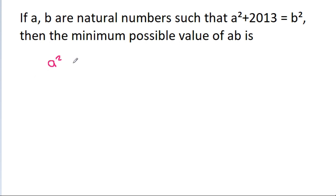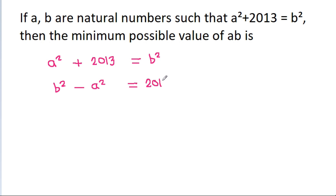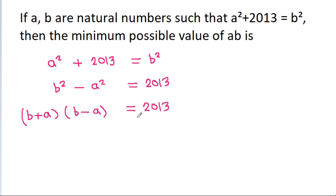We have A squared plus 2013 is equal to B squared, so B squared minus A squared is equal to 2013. And B squared minus A squared is (B plus A) times (B minus A), that is equal to 2013.